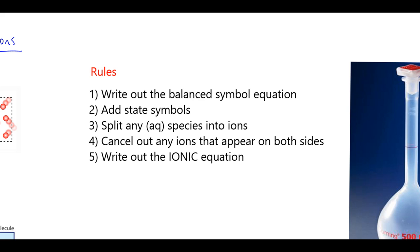Once you've done that, rule four is to look for any ions that appear on both sides of the equation, and if there are, cancel those out. Step five is just tidying up and writing out the finished ionic equation.